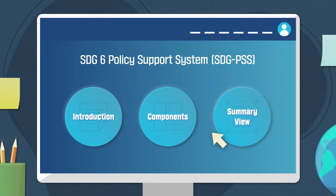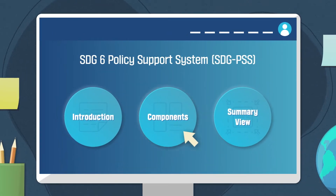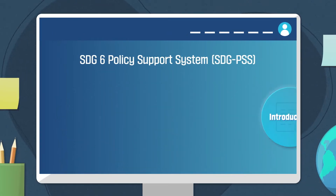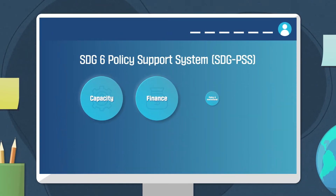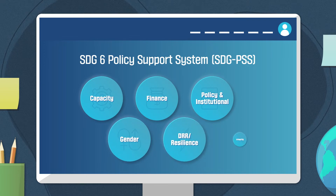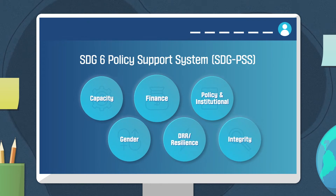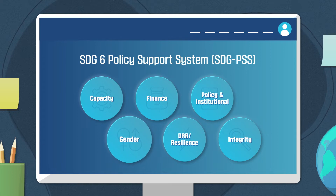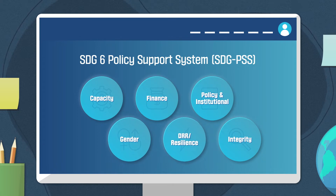SDG 6 consists of six policy-critical components, which are Capacity, Finance, Policy and Institutions, Gender, Disaster Risk Reduction, Resilience, and Integrity.